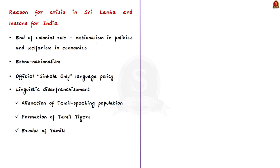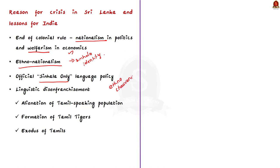Since the end of colonial rule, Sri Lanka's political arrangement has been a combination of nationalism in politics and welfarism in economics. Particularly, ethno-nationalism was given more importance, visible in Sinhala identity and the official Sinhala-only language policy. This action empowered ethno-chauvinism and left the Tamil-speaking population insecure. The linguistic disenfranchisement of Tamils caused not only the alienation of the Tamil-speaking population but also led to the formation of the Tamil Tigers, that is LTTE, and a civil war. The Tamil Tigers were fully vanquished, but it took over two and a half decades.